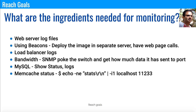If you have Memcache installed in your application, there is a Memcache status command which can be used to get Memcache information, and this can also be used to build the monitoring tool. Even though you have all that information, you also need to write an appropriate alerting mechanism so that if there is any issue happening across your system, you can alert the appropriate production support or production engineering team to take appropriate actions.